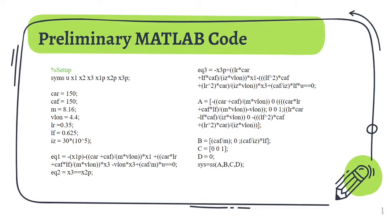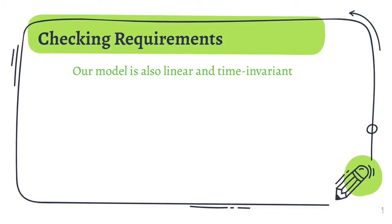We then write the equations and separate our state-space model into its ABCD components. For us to use a controller, our state-space model has to be linear, time-invariant, stable, and observable. Our state-space system is linear as we can represent it in its state-space structure. Now, to check for time-invariance.